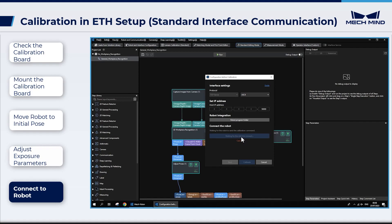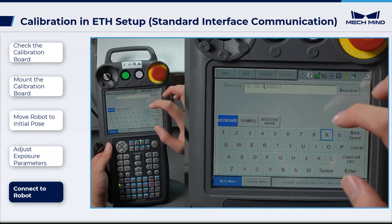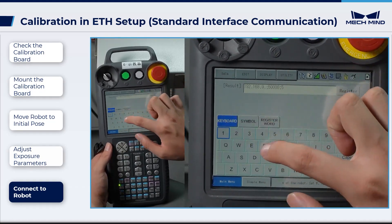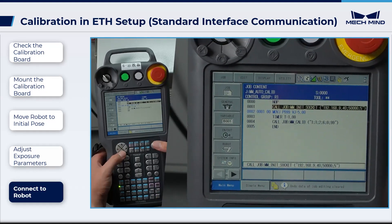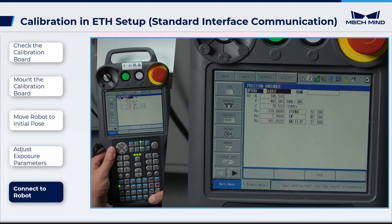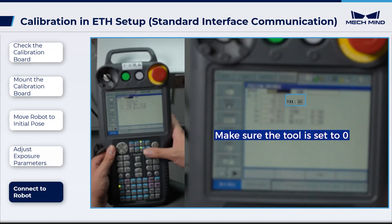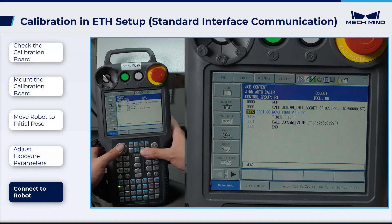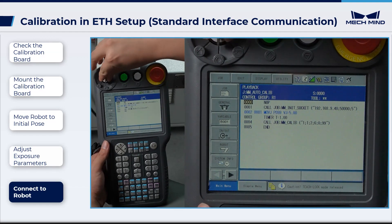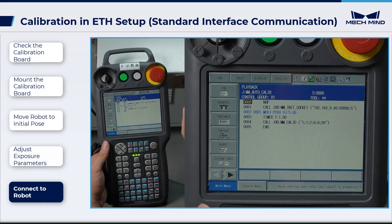Next, on the Teach Pendant, change the IP address to the IP address of the IPC, and record the robot's initial position to variable P099. After completing the above settings, return to the first line of the program. Switch the robot to Automatic Mode and run the program.